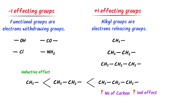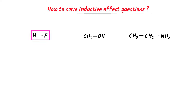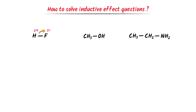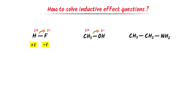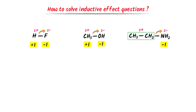Finally, let me teach you how to solve inductive effect questions. Consider these compounds. Halogens are more electronegative — chlorine will attract the shared pair of electrons. Thus, chlorine is an electron withdrawing group or negative I, while the alkyl group is an electron releasing group or positive I. In the next case, OH is a functional group, so it has more inductive effect and is a negative I group, while the alkyl side is a positive I group. Similarly, NH2 is a functional group, so it is a negative I group, while the other side is a positive I group.